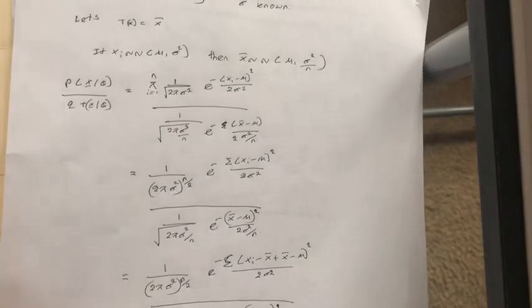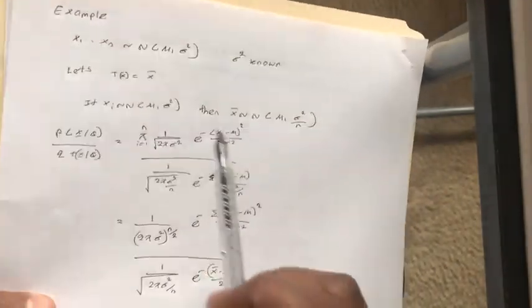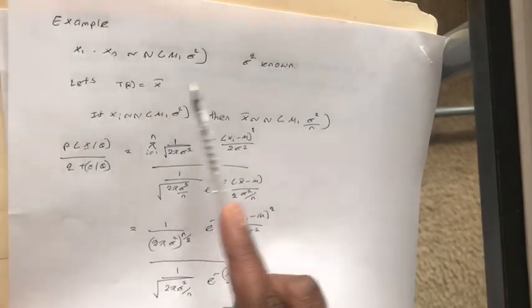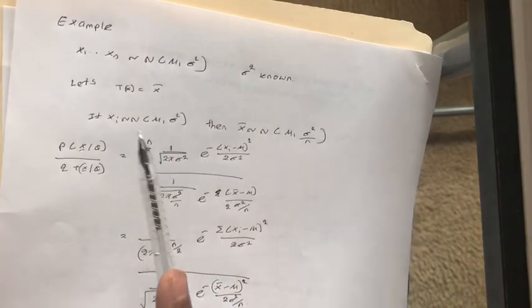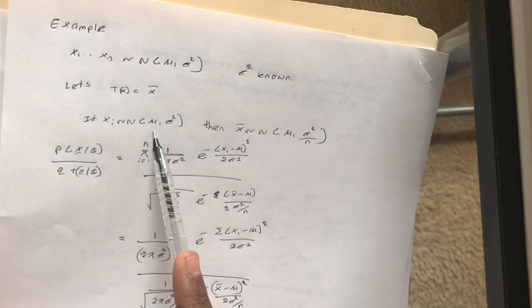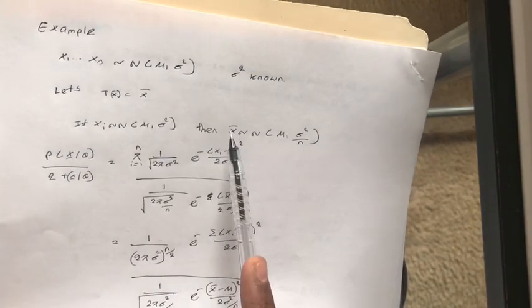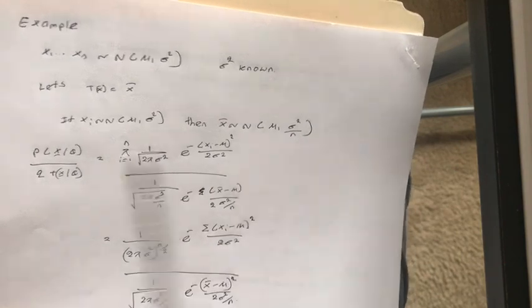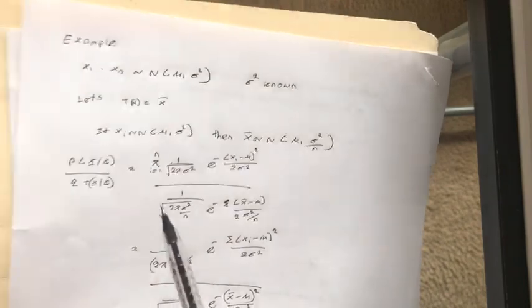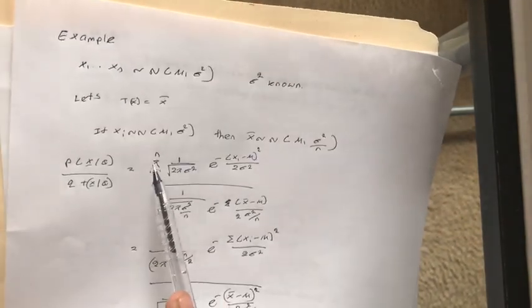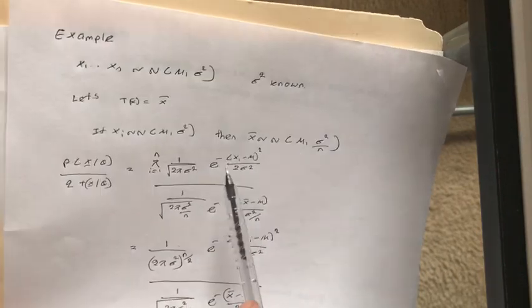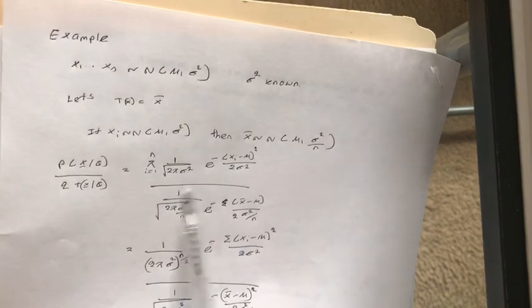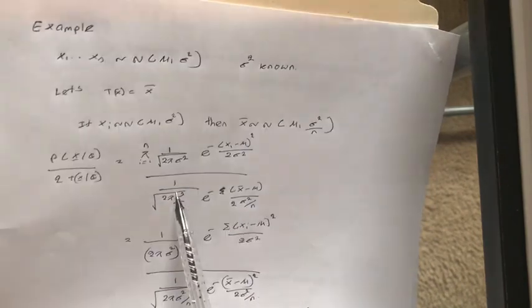For another example, let's say the data is normally distributed with mean mu and variance sigma squared, where sigma squared is known. We assume T(X) is X-bar, the sample mean. We know that if X is normally distributed with mean mu and variance sigma squared, then the distribution of X-bar is normal with mean mu and variance sigma squared over N. Now we are going to find the ratio of these two functions. Since the values are again IID, we can write the joint distribution as a product of individual PDFs divided by the distribution of X-bar.